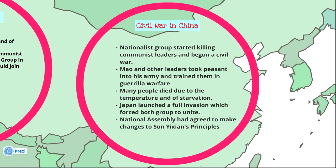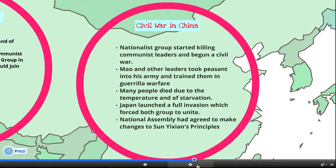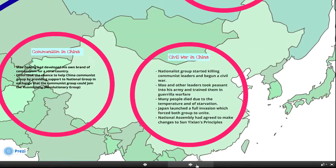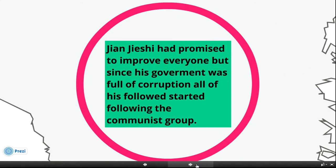The Civil War in China: Nationalist groups started killing Communist leaders and began a civil war. Mao and other leaders trained their army in guerrilla warfare. Many people died due to harsh temperatures and starvation. Japan launched a full invasion, which forced both groups to unite. The National Assembly agreed to revise Sun Yat-sen's principles. However, since Chiang Kai-shek's government was full of corruption, his followers began turning to the Communist group.